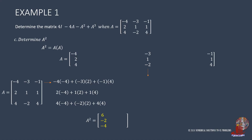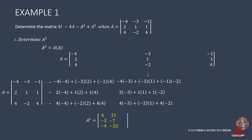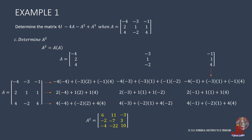Moving on to the next column, row 1 and column 2 gives negative 4 times negative 3, plus negative 3 times 1, plus negative 1 times negative 2, resulting in 11. Row 2 multiplied by column 2 computes 2 times negative 3, plus 1 times negative 2, plus 1 times negative 2 to get negative 7. Row 3 multiplied by column 2 has 4 times negative 3, plus negative 2 times 1, plus 4 times negative 2 to get negative 22. Then row 1 with column 3: negative 4 times negative 1, plus negative 3 times 1, plus negative 3 times 4, makes negative 3. Row 2 with column 3 has 2 times negative 1, plus 1 times 1, plus 1 times 4, results in 3. And row 3 with column 3 has 4 times negative 1 plus negative 2 times 1 plus 4 times 4, which is 10.